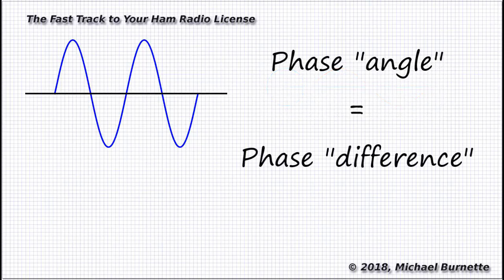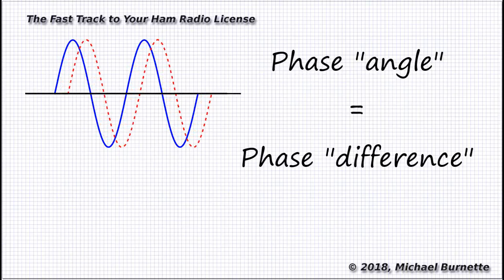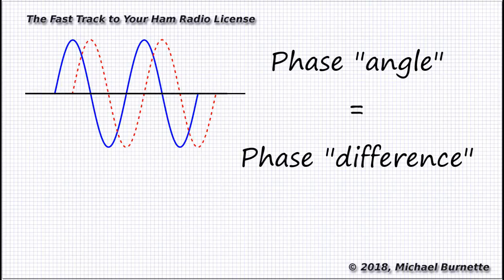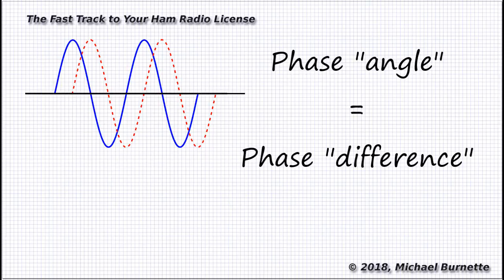Here's what a 90-degree phase angle between two sine waves of equal frequency looks like. Just as the first sine wave, represented by the solid blue line, reaches the 90-degree mark — that crest of the wave — the second sine wave, the red dashed one, is at the zero mark and starting up. We call that a 90-degree phase angle. If the sine waves matched up at all points, we'd say they're in phase, but those two are out of phase by 90 degrees.